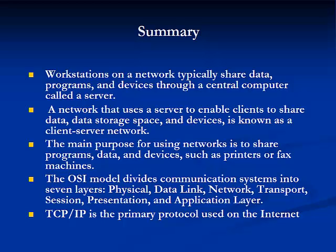In this module, we have covered the following main points. Workstations on a network typically share data, programs, and devices through a central computer called a server. A network that uses a server to enable clients to share data, data storage space, and devices is known as a client-server network. The main purpose for using networks is to share programs, data, and devices such as printers or fax machines. The OSI model divides communication systems into seven layers: the physical layer, data link layer, network, transport, session, presentation, and application layers. TCP/IP is the primary protocol used on the Internet.